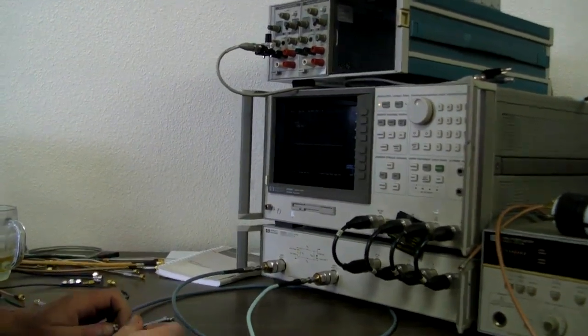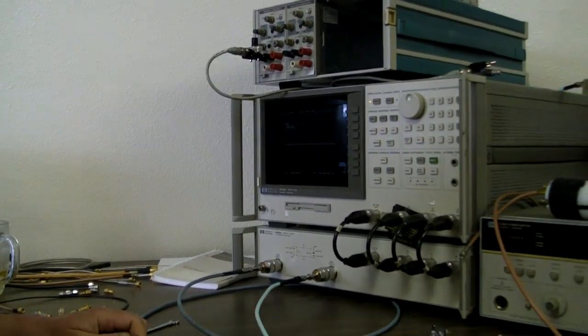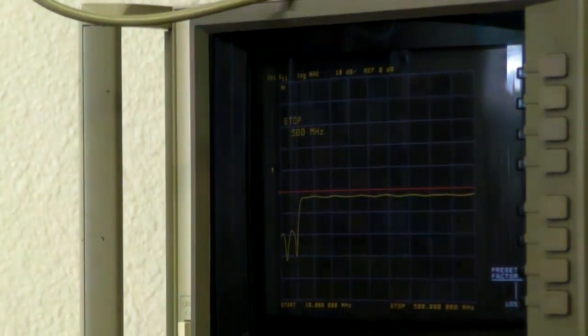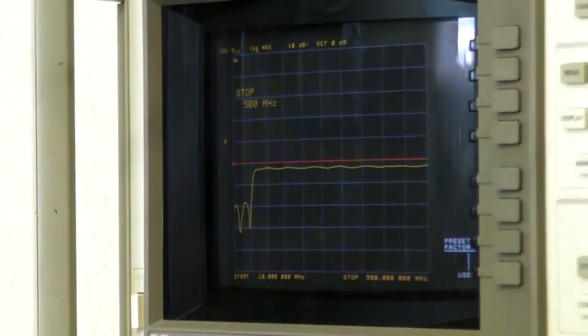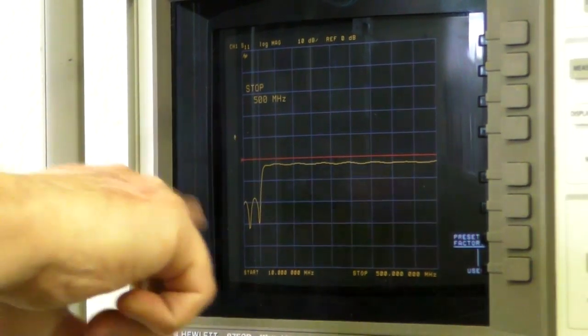Then we'll just look at the filter right quick to make sure it's more or less what we want to see, and we haven't done anything stupid. You can see down at the passband, S11, the port one match is pretty good.